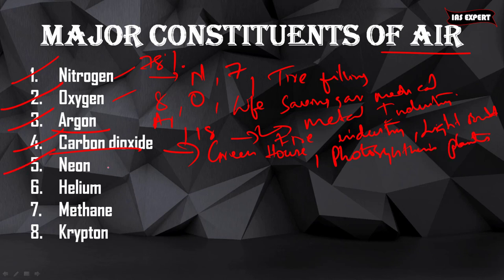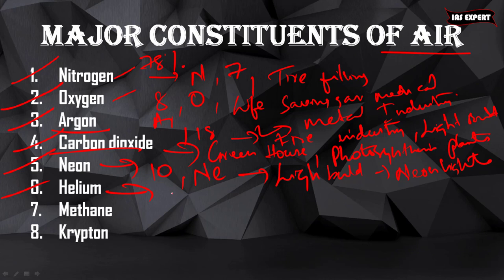Coming to the fifth: neon. Atomic number is 10 and symbol is Ne. Used in light bulbs, usually called neon lights. The sixth one is helium. Atomic number is 2 and symbol is He. Mainly used in welding and used in balloons. Helium is the lightest gas.